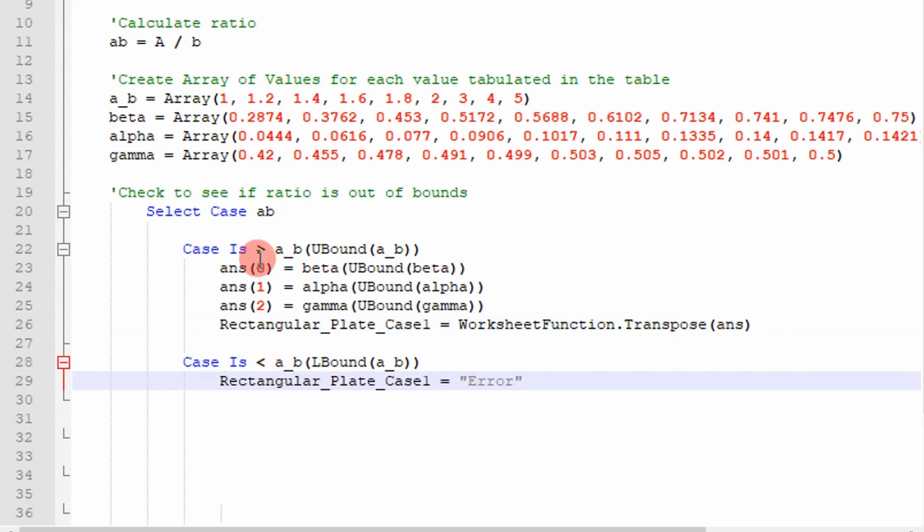So if my a over b ratio is less than one right here, then I don't have any values to refer to in this table. So I'm just going to say send an error message back. And we saw that when I was messing with the numbers in the Excel spreadsheet.